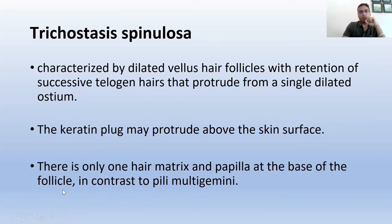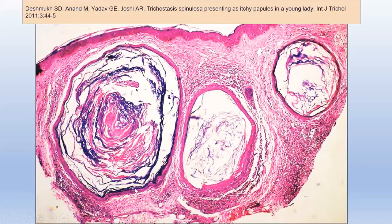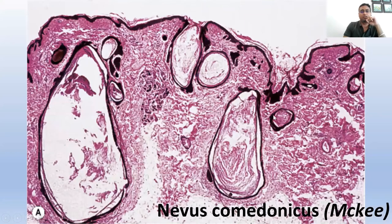A published case report described trichostasis spinulosa presenting as itchy papules, but those histological images actually show infundibular cysts quite deep in the dermis with a lichenoid reaction — not trichostasis spinulosa by any means. Looking at a picture of Nevus comedonicus from Mackie's textbook: yes, one lesion is a comedone, but another is a huge deep cyst in the deep dermis — an infundibulosis, not a comedone. And another is a milial cyst with no overlying connection to the epidermis. There is a lot of confusion.